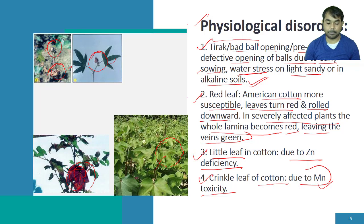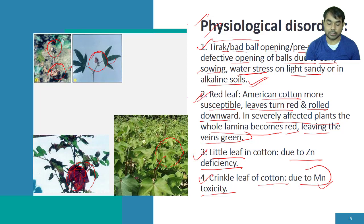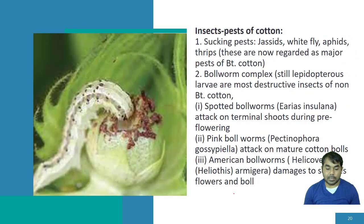So the four physiological disorders are: first, therac — also called bad ball opening or prematurely defective opening of the boll; red leaf, which is the problem in American cotton; little leaf, due to zinc deficiency; and crinkle leaf, due to amine toxicity.